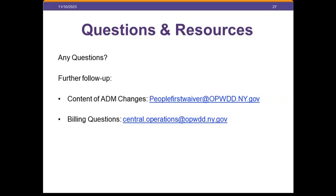Another question: what is the point of unique identifiers for services delivered via technology? The Medicaid system is identifying claims delivered via technology to track uptake and where it is helpful. More importantly, we have assurances to the federal government that technology is not the only modality people are receiving services through—they want to ensure people are not isolated by receiving only technological delivery rather than in-person services. That is why we must identify those claims, even though there is no payment differential between technology-delivered and in-person service time.